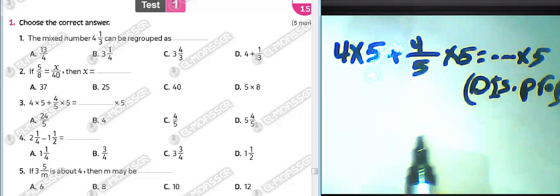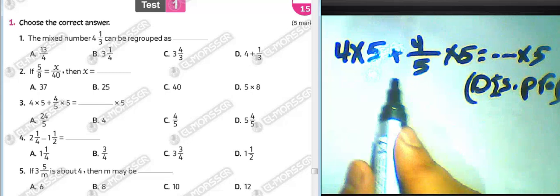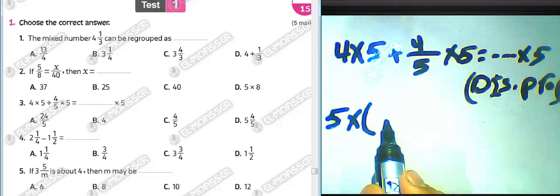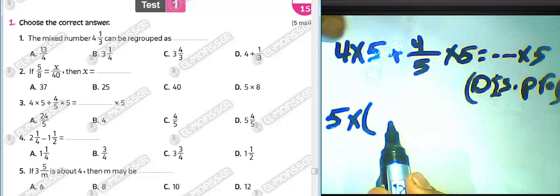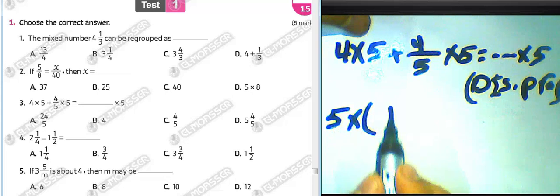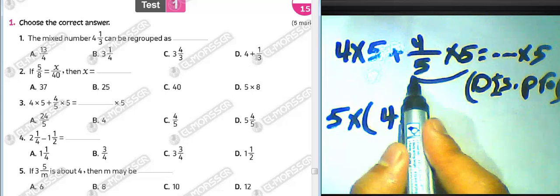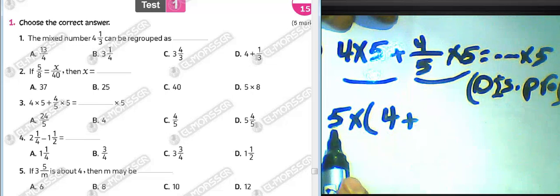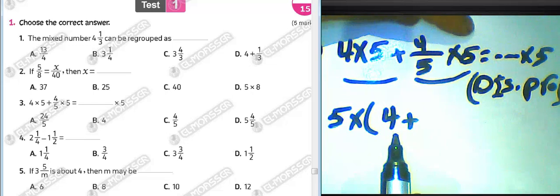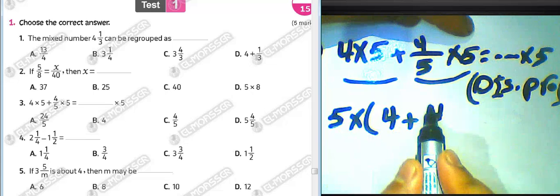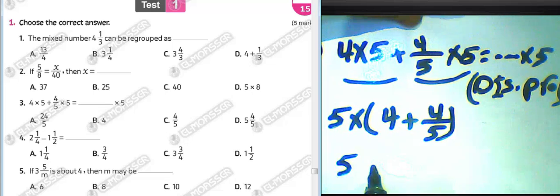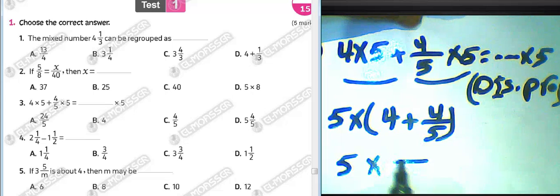Using the distributive property, five is repeating so we write five outside. Four times five divided by five equals four, and four over five times five divided by five equals four over five. So the result is five multiplied by four plus four over five.